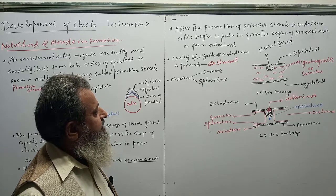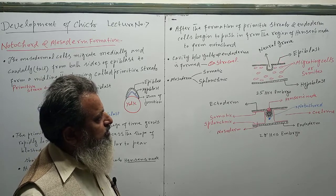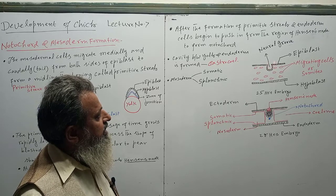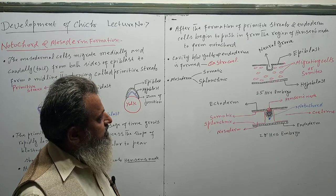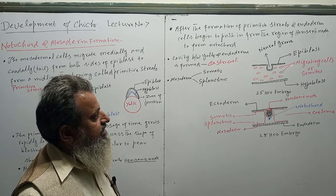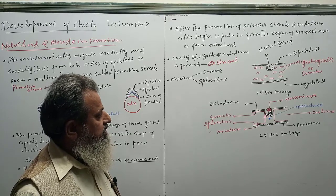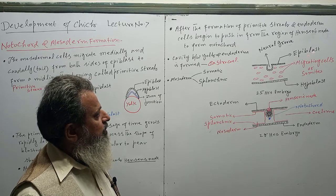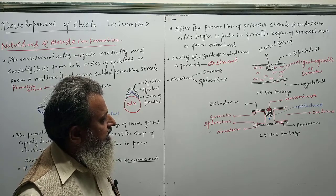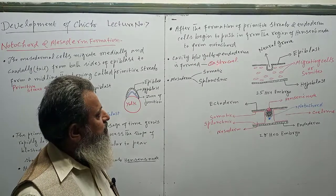You can see here that there is a groove-like structure — an indentation or depression — which is known as the neural groove. Here is the hypoblast. The hypoblast cells migrate; these cells are known as migrating cells. The cavity between the yolk and endoderm is formed, and that cavity is known as the gastrocoel.